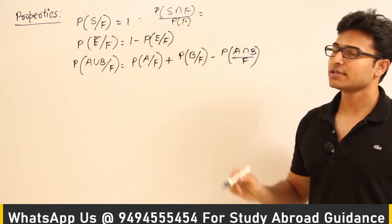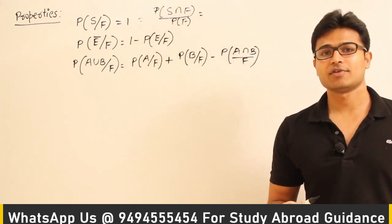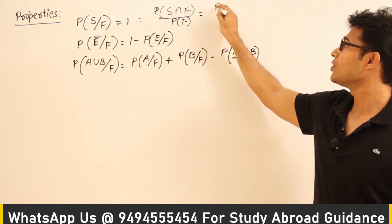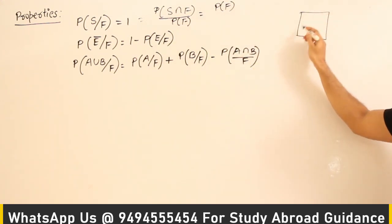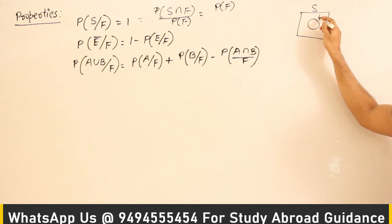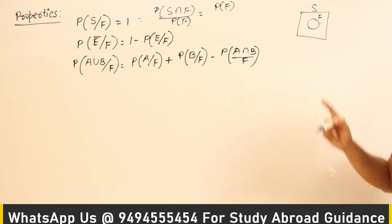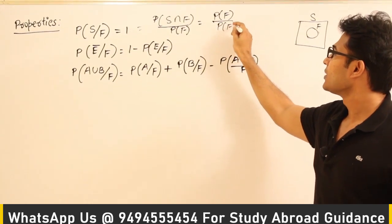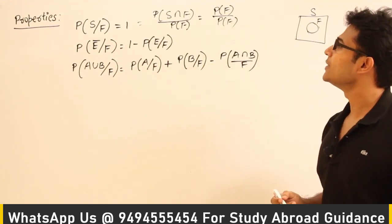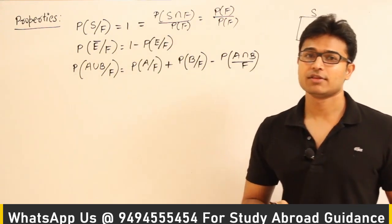Now, what about S intersection F? We know that F is a subset of S. Therefore, P of S intersection F is going to be P of F, because S is the sample space and F is inside it. If you take the intersection of these two, the intersection is going to be the smaller one, which is F divided by P of F. So it need not always be S — there are some events where we get a probability of one.